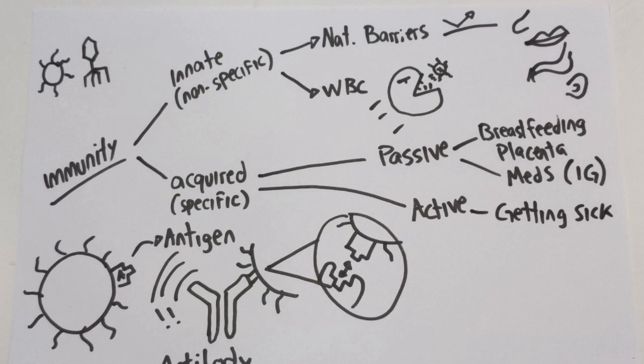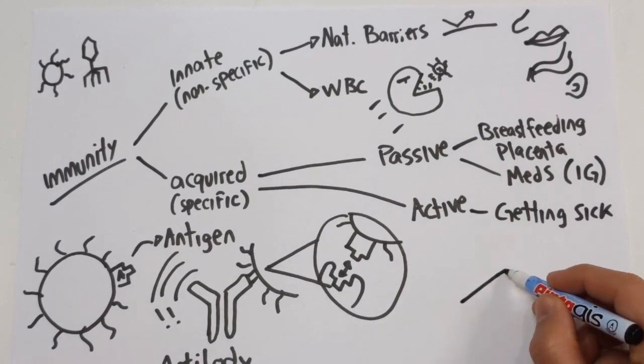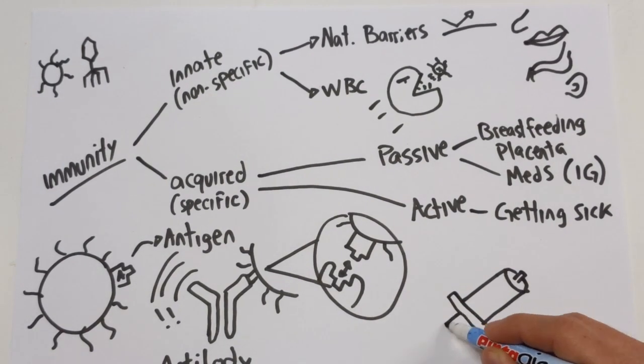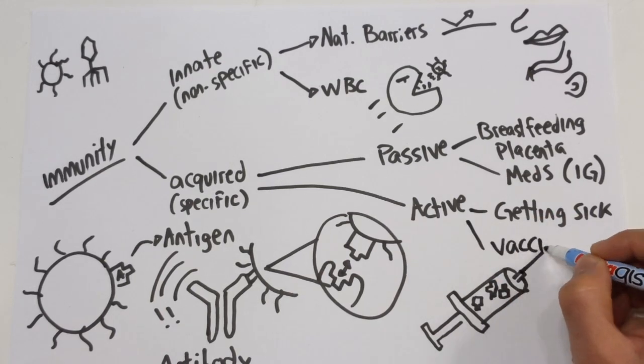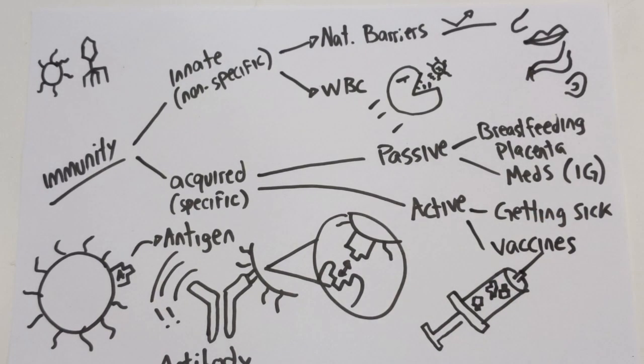If only there was a way to develop antibodies to a certain disease without getting sick. But there is, and they are called vaccines. The main principle of vaccines is injecting your body with a certain antigen without having to expose it to the complete infection-capable pathogen. Vaccines are very special because if you got sick by some of the pathogens they protect for, the infection would be deadly before your body is even able to make antibodies for it.